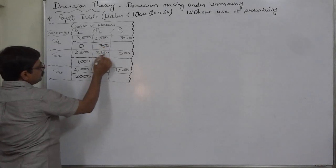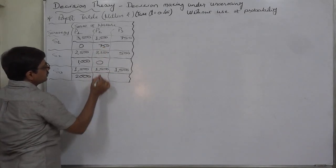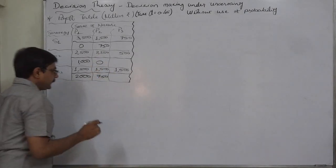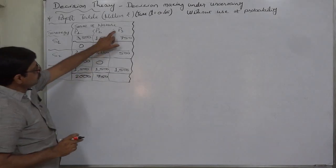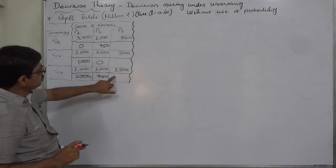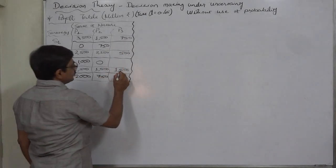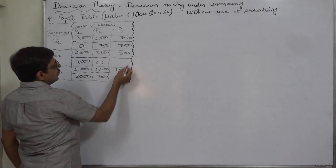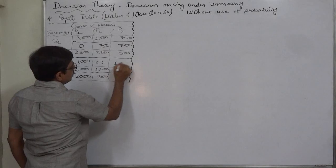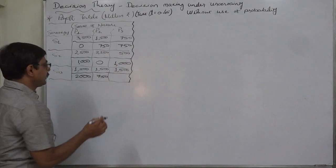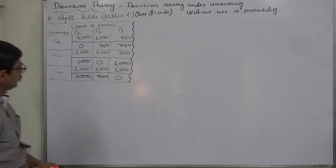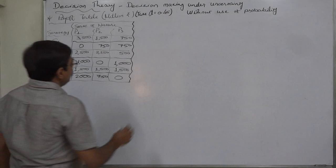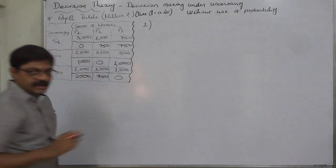For state of nature P2, the highest payoff is 2250: 2250 − 2250 = 0, and 2250 − 1500 = 750. For state of nature P3, the highest is 1500: 1500 − 750 = 750; 1500 − 500 = 1000; and 1500 − 1500 = 0. Opportunity loss or regret can never be negative.